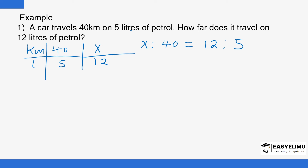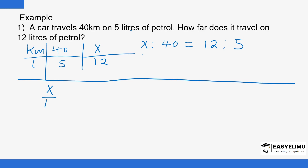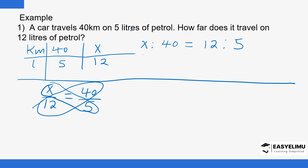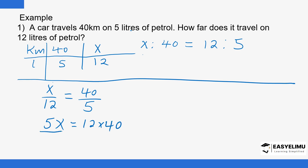The two ratios are equal. In proportions, this means x divided by 12 equals 40 divided by 5. You can cross multiply: 5x equals 12 times 40. Dividing both sides by 5 gives x equals 96 kilometers. So the number of kilometers increases from 40 to 96 kilometers.